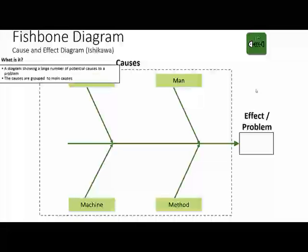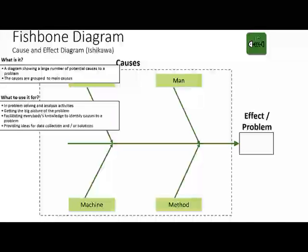It's a diagram to help us list a large number of potential causes to a problem, and the causes are grouped into these four main categories. You may see other fishbone diagrams that have six categories — the other two sometimes used are measurement and environment. But the most popular ones are material, mean, machine, and method.